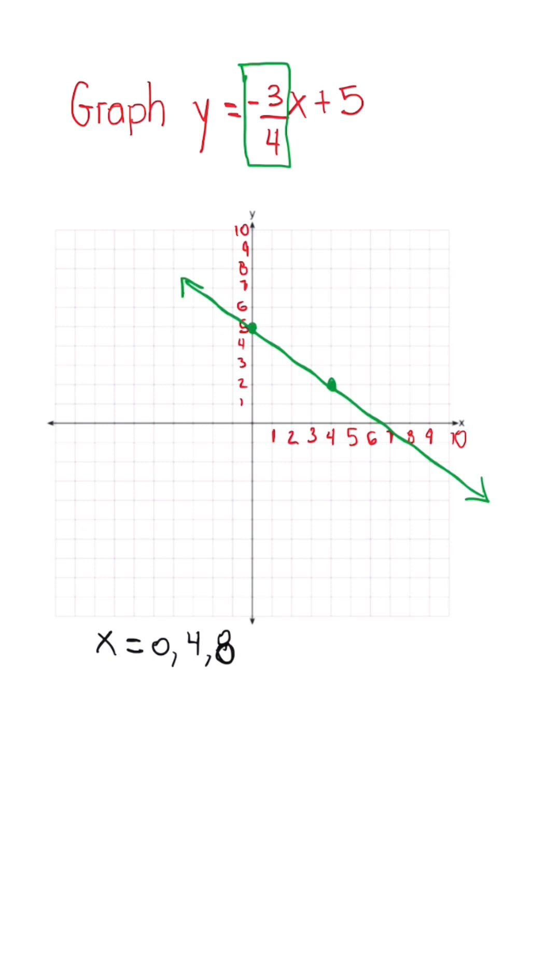We already know when x is 0, y is going to be 5. That's how we get the ordered pair (0, 5). But now once we substitute in a different value...